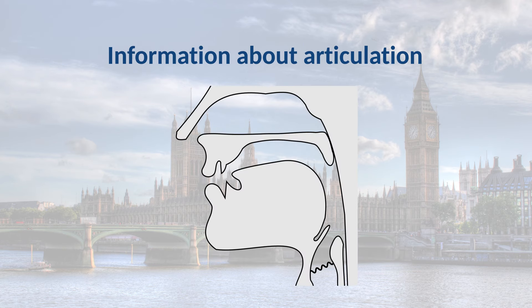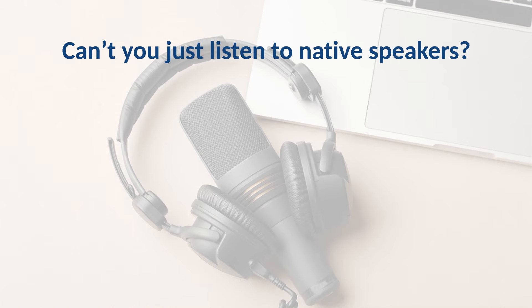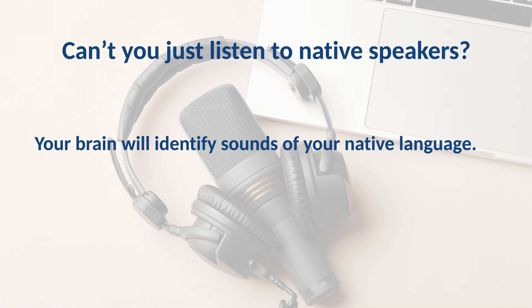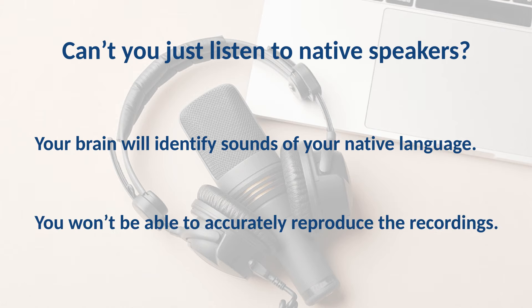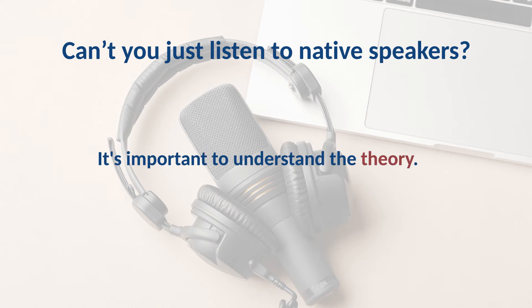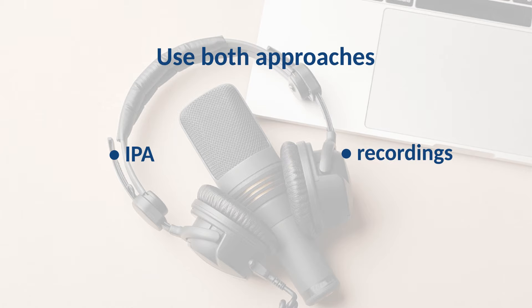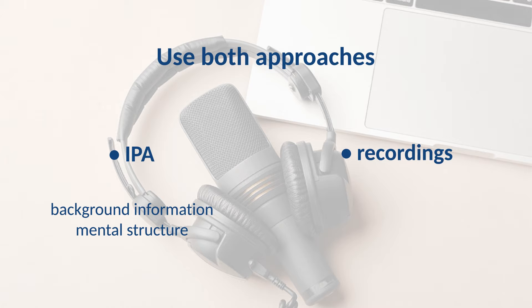The IPA transcription gives precise information to position your mouth, lips, and tongue, and get these sounds right. Can't you just listen to native speakers? Your brain will try to identify sounds of your native language, and you won't be able to accurately reproduce recordings unless you're one of a few very gifted people. For the majority of learners, it's important to understand the theory. The best approach is to use both the IPA and recordings — the IPA gives you the background information and a mental structure to start with, while recordings allow you to fine-tune the sounds to match native speakers.